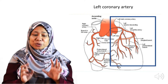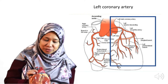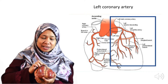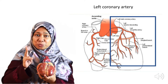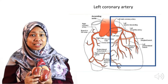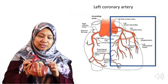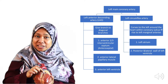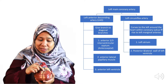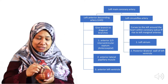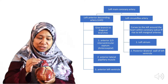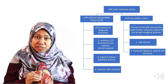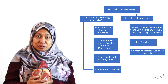Now let's go to the left coronary artery. The left coronary artery arises from the left cusp of the aortic valve, travels forward, and becomes the left main stem. It then branches into two branches: the left anterior descending artery and the left circumflex artery. The left anterior descending artery travels along the interventricular septum, supplying the interventricular septum and the anterior part of the heart.